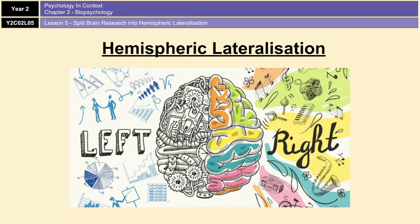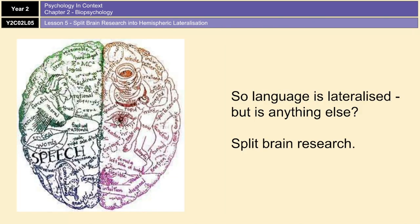Language is dominated by the left hemisphere of your brain. The ability to produce and understand language for most people is controlled by the left hemisphere, which suggests that for the majority of us, language is subjected to hemispheric lateralization. The question of whether other neural processes may be organized in the same way was investigated by a series of experiments conducted by Roger Sperry and his colleagues, known as split brain research.